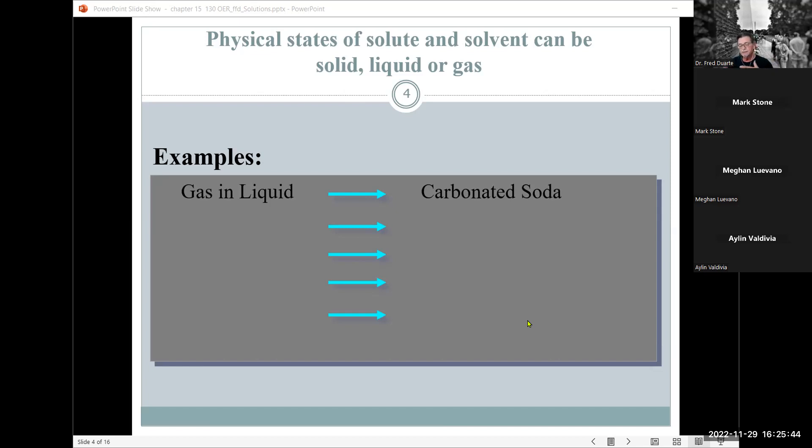So obviously the far right is very strong and concentrated and the material on the left is weak. Okay. So there are a lot of examples of solutions and one is with respect to physical state. You can have a gas in a liquid. For example, you can have a carbonated drink.